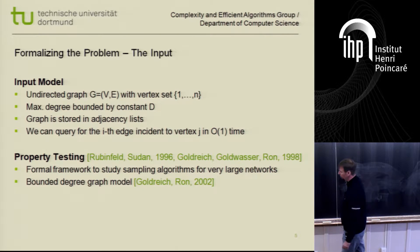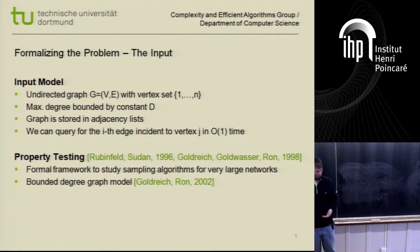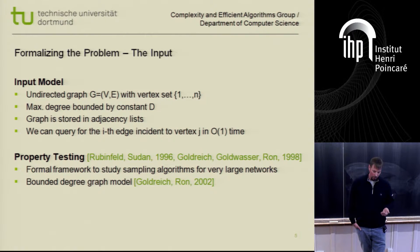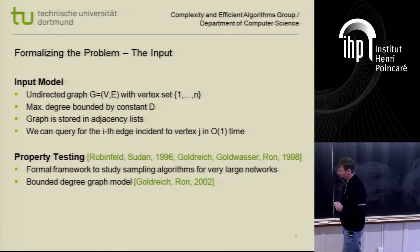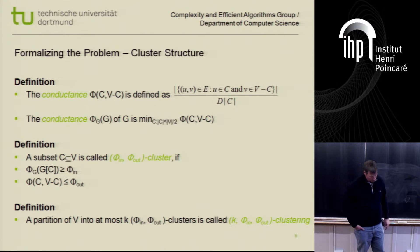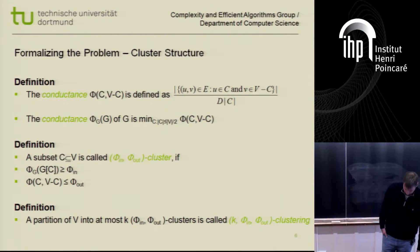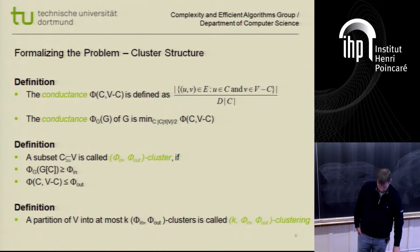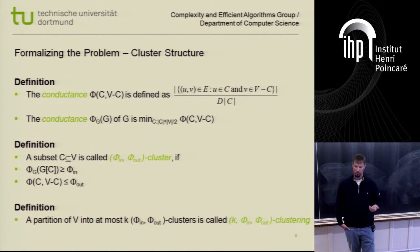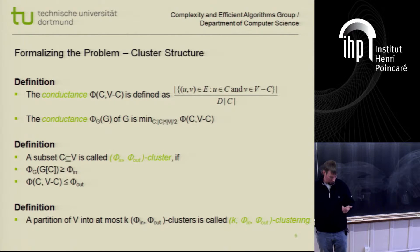I want to study the question of testing cluster structure in the framework of property testing, which was introduced by Rubinfeld and Sudan, and later for graphs by Goldreich, Goldwasser, and Ron. Property testing is a formal framework to study sampling processes for very large networks. Here I'm using the bounded degree graph model introduced by Goldreich and Ron.